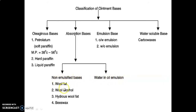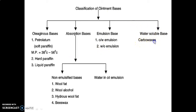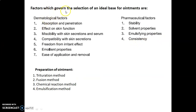In non-emulsified bases, there are four types — for example, wool fat, wool alcohol, hydrous wool fat, and beeswax. Emulsion bases are of two types: oil-in-water (O/W) emulsion, in which oil acts as the internal phase while water acts as the external phase; and water-in-oil (W/O) emulsion, in which water acts as the internal phase while oil acts as the external phase. Water-soluble bases include carbowaxes.